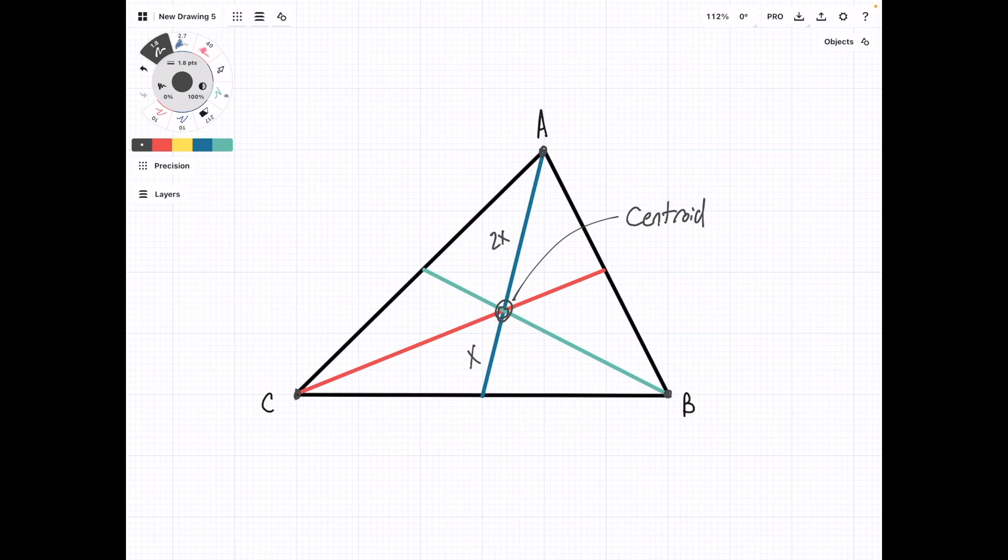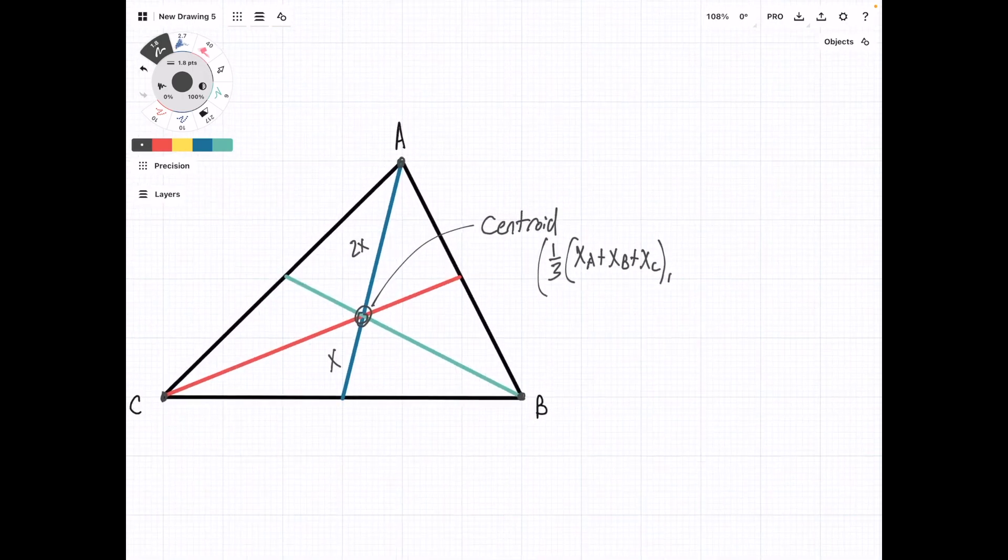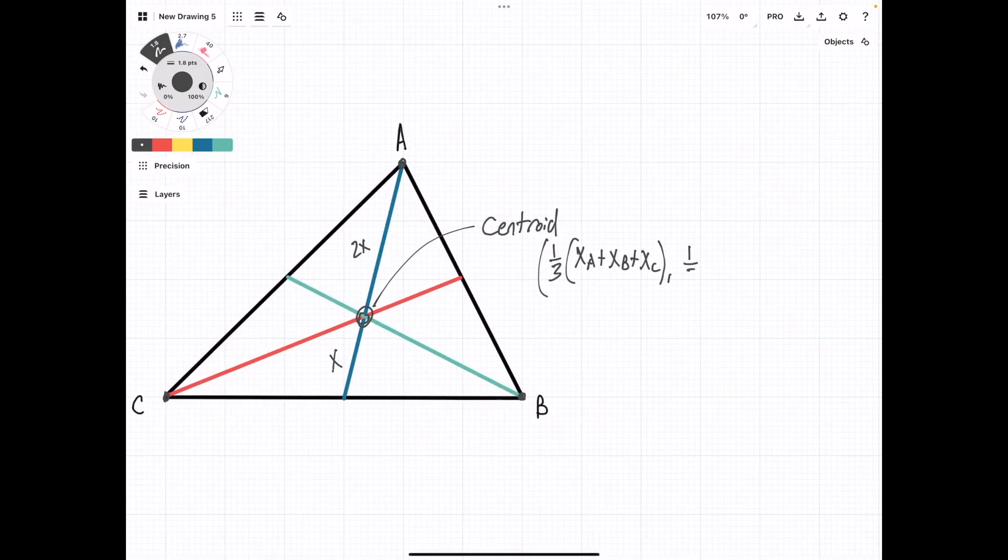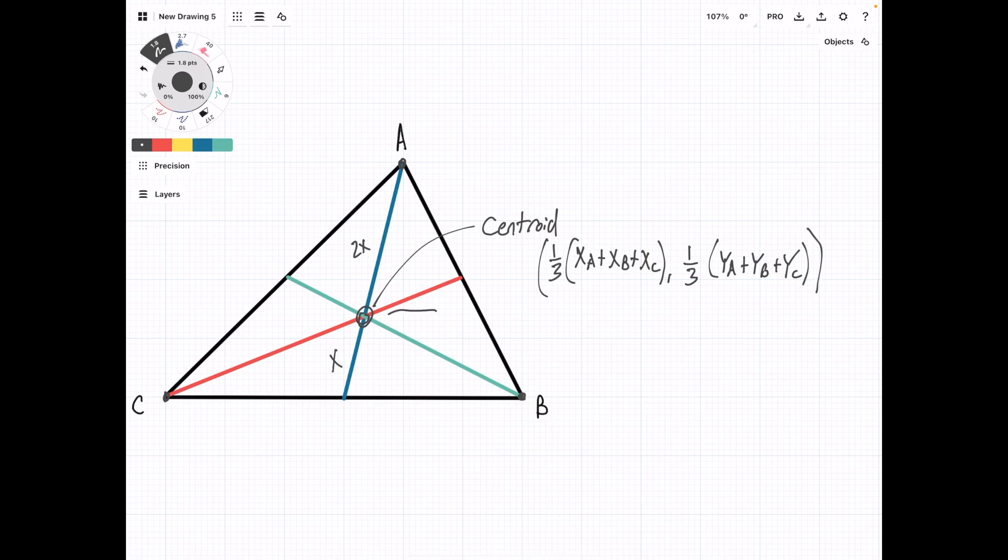And so the centroid is going to be located at (xA + xB + xC) divided by 3, comma, one-third of (yA + yB + yC). And so if we take the average of all these points, then we're going to get the coordinates of the centroid.